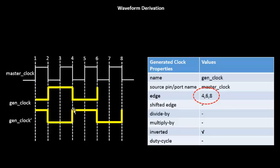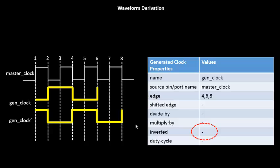This clearly specifies that the first rising edge of the generated clock comes at the fourth edge of the source clock. The fourth edge could be a rise or a fall — it doesn't matter, it is just an edge number. The first falling edge comes on the sixth edge of the source clock. So you define 4, 6, 8 here and you don't even need the inverted option — you can just put a dash. This is always possible with the edge property of the generated clock; all these features are always achievable.